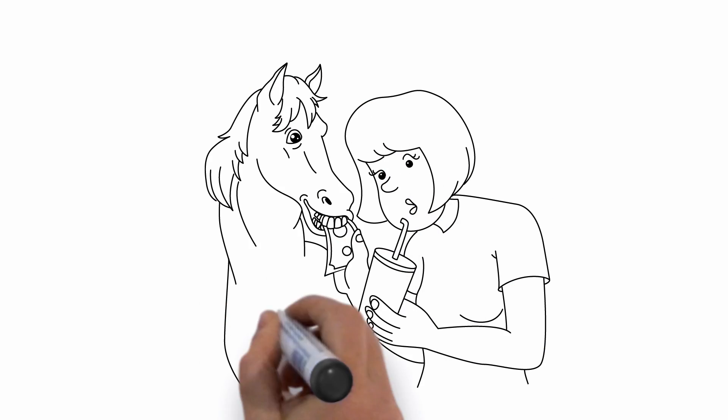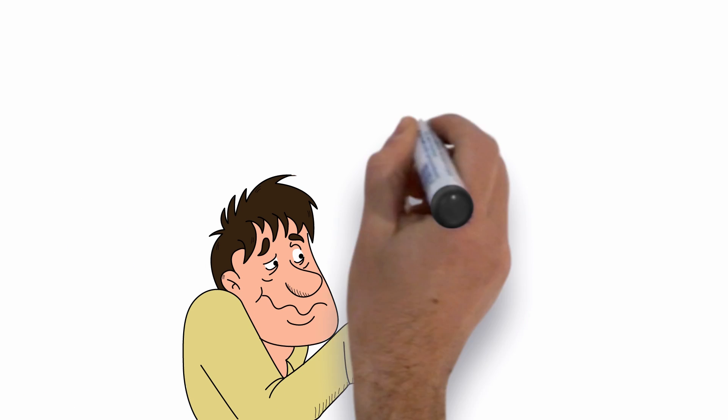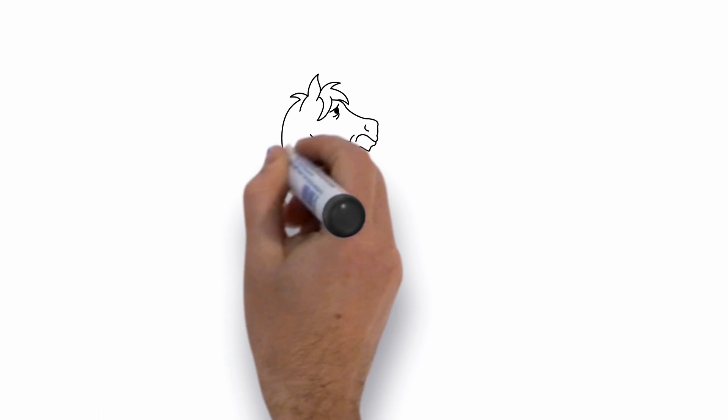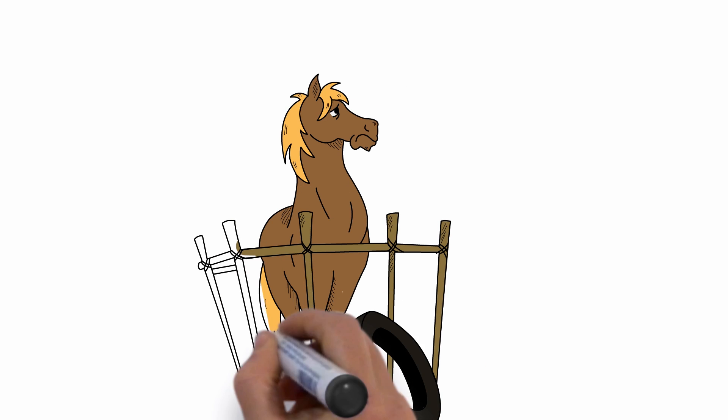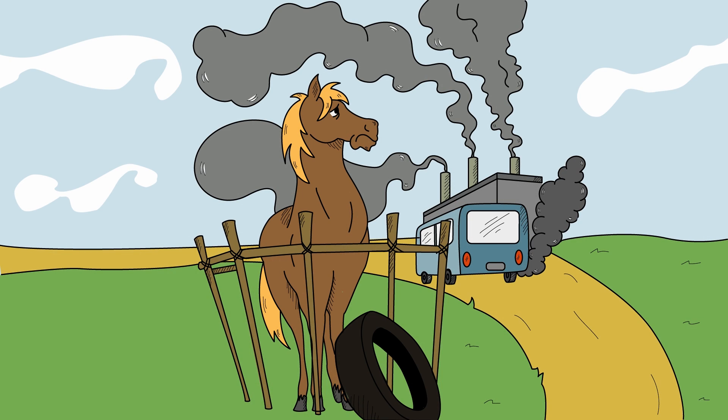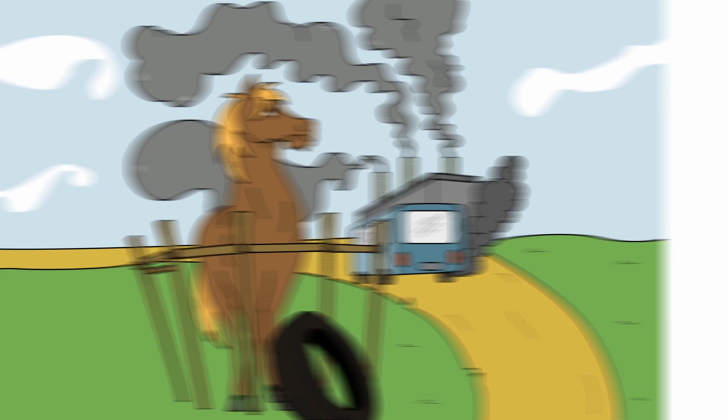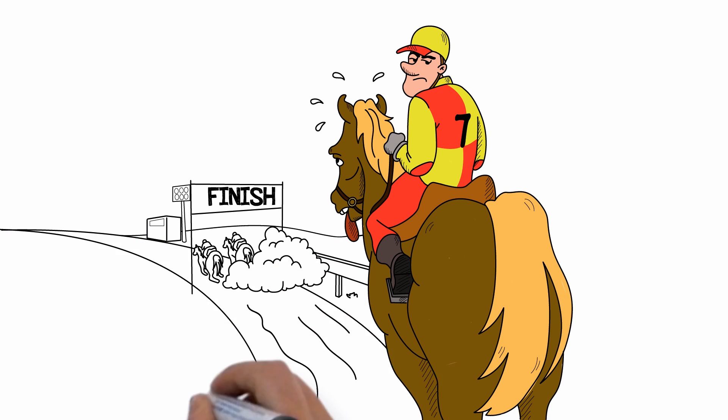If you had a million dollar racehorse, would you ever feed it junk food? Would you ever get it drunk or stoned? Would you ever prevent it from exercising? Or allow it to breathe polluted air or drink polluted water if you could help it? Of course not, unless you wanted to lose every race.